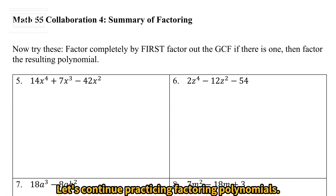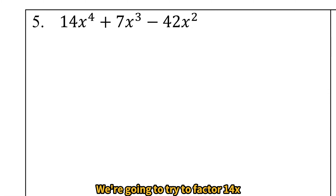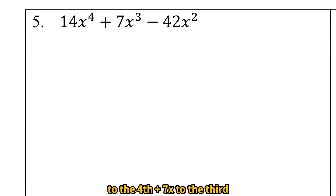Let's continue practicing factoring polynomials. Remember that our first step is to factor out a greatest common factor. We're going to try to factor 14x to the fourth plus 7x to the third minus 42x squared.